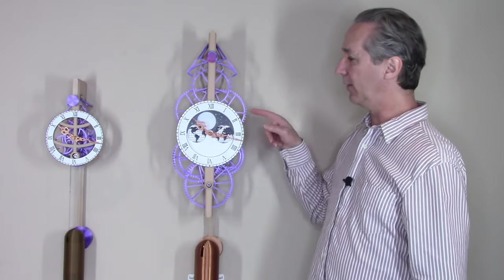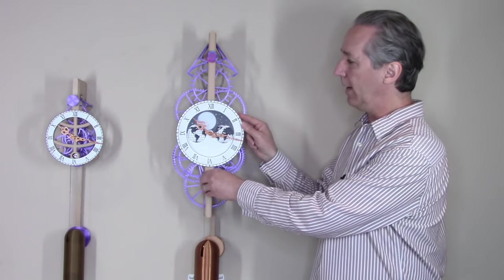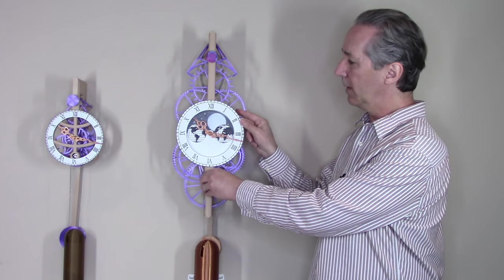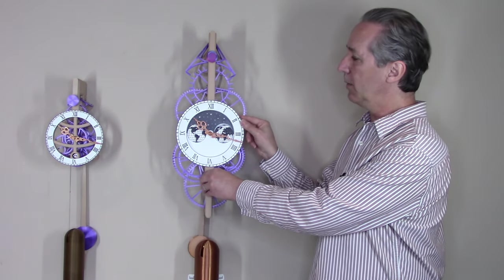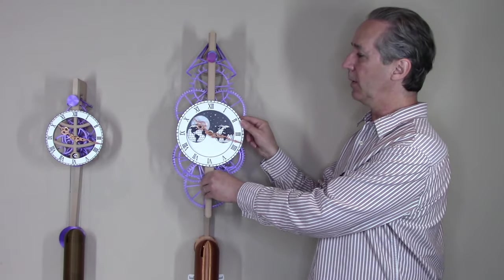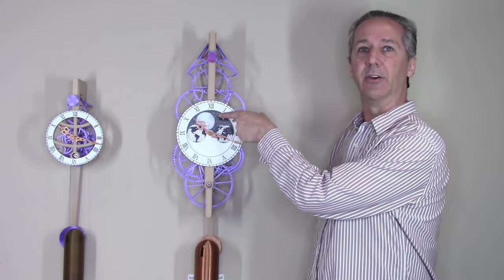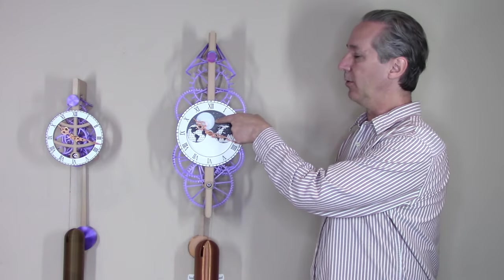This clock adds a moon phase dial that tells you when the moon shifts from a full moon to a new moon and then from the new moon back to the next full moon. The moon phase is accurate to about one day every two and a half years.